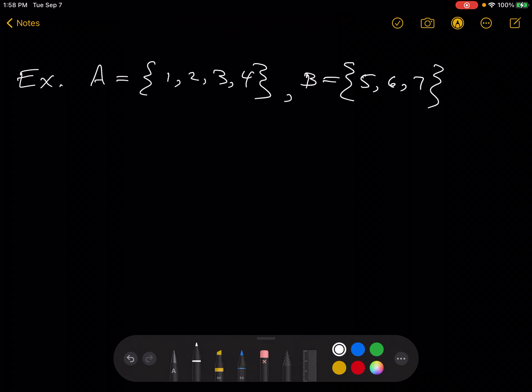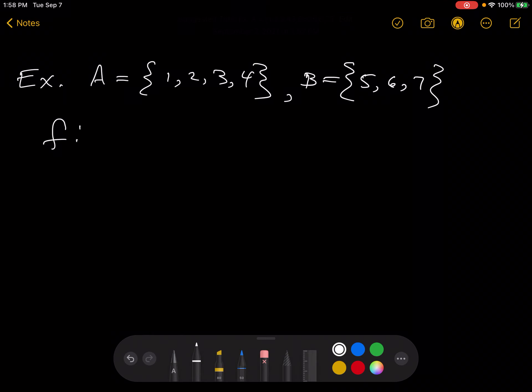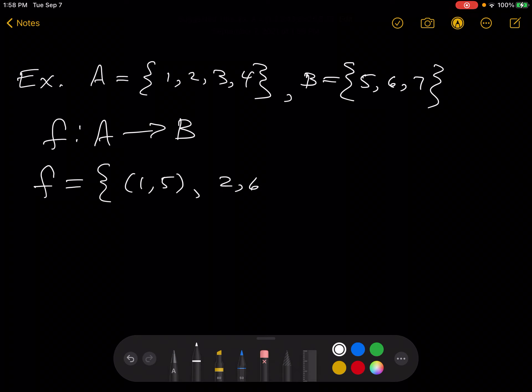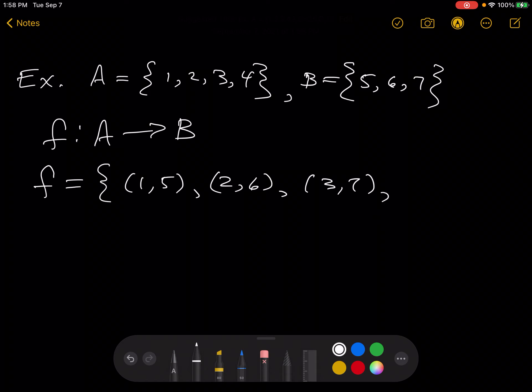And let's suppose that we have the function f from A to B defined by the set of ordered pairs: 1, 5, 2, 6, 3, 7, and 4, 5.